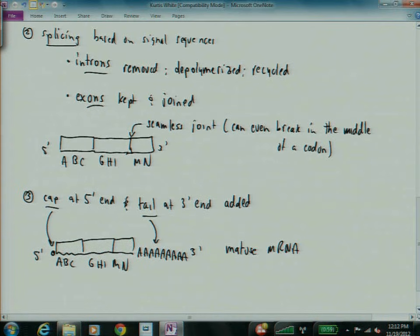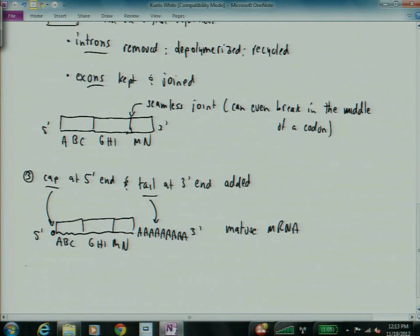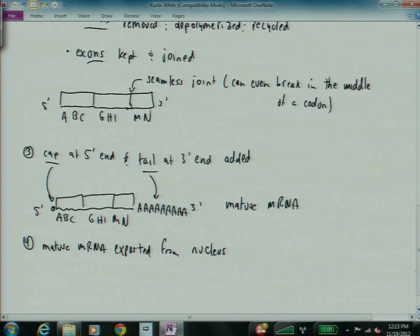And here it's not, again, not clear why these exist. It is likely that the cap and the tail are added last, and so signal this thing is done being spliced. It's okay to translate. They're like markers that say processing's done. You can go ahead and translate it, because the next steps are number four is the mature mRNA is exported from the nucleus, and then number five, the mature mRNA is translated by ribosomes in the cytoplasm.